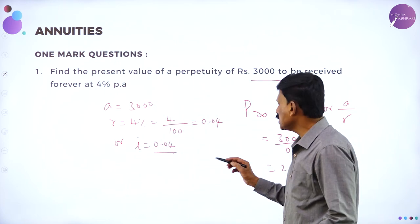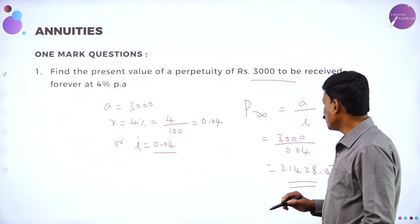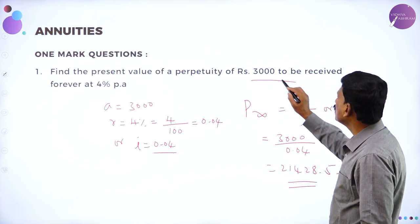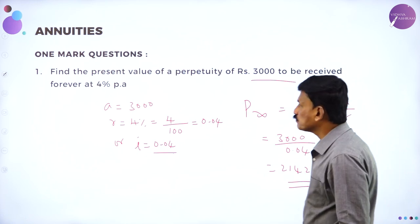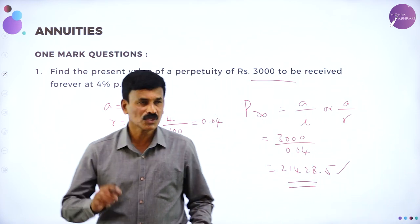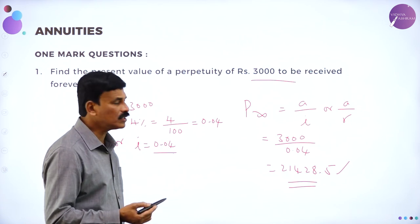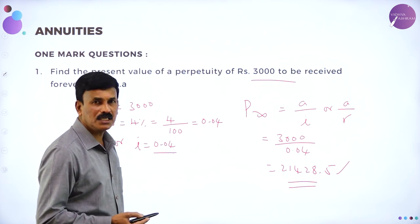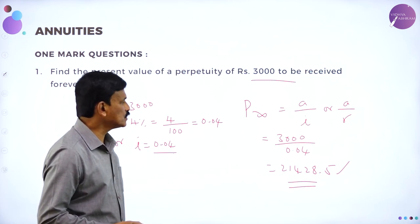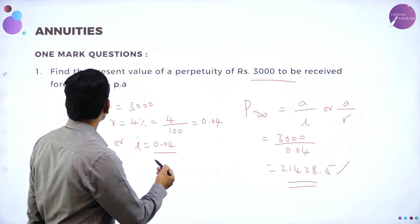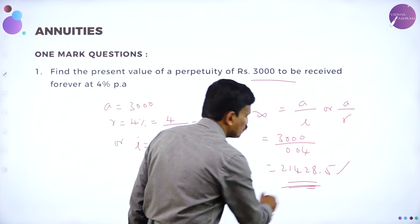Therefore, the present value is rupees 21,428.5 — this is the present value for the amount of rupees 3000 at the rate of 4 percent per annum.